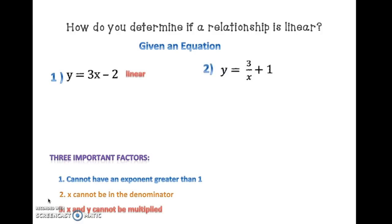Number 2: y is equal to 3 divided by x plus 1. The exponent is 1, but x is in the denominator — so we can safely say this is non-linear. Number 3: y is equal to one-half x plus 2. The exponent is 1, x is not in the denominator, and x and y are not multiplied. Therefore, this is linear.